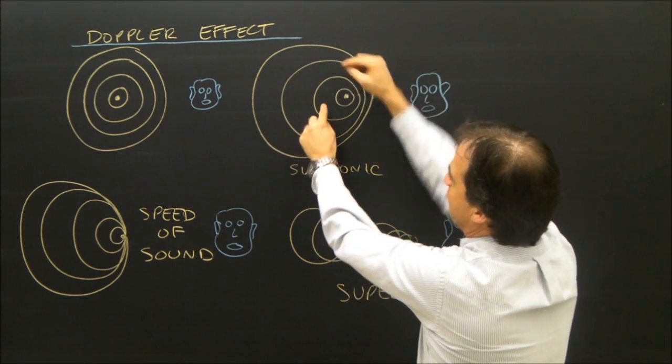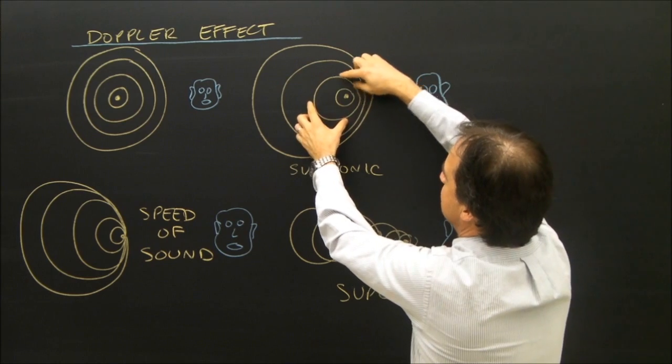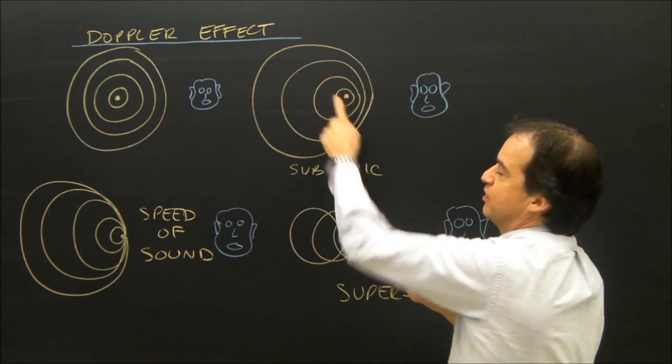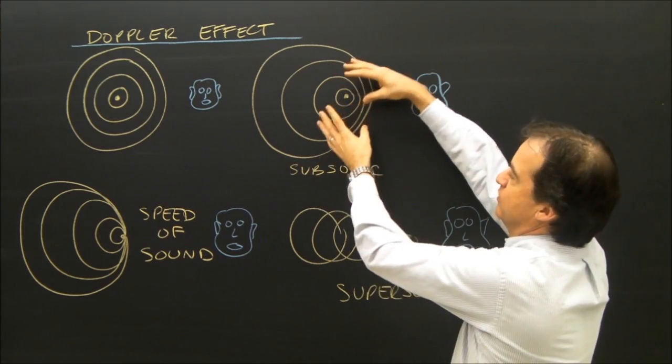This sound was created when the object was here, and that's why it's around that point. This sound wave was created when the object was here. So the object creates a sound wave, then moves, creates another sound wave, and moves, creates another sound wave.